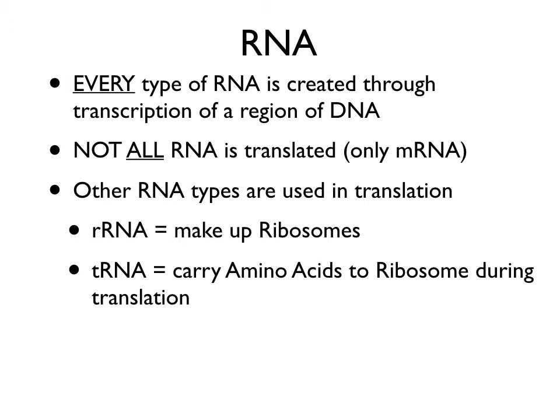RNA is a large category of molecules comprised of ribonucleic acids. Every bit of RNA found in your cells is created through the process of transcription of a region of DNA. All the RNA found in our cells and in cells of bacteria that have DNA is produced through transcription.